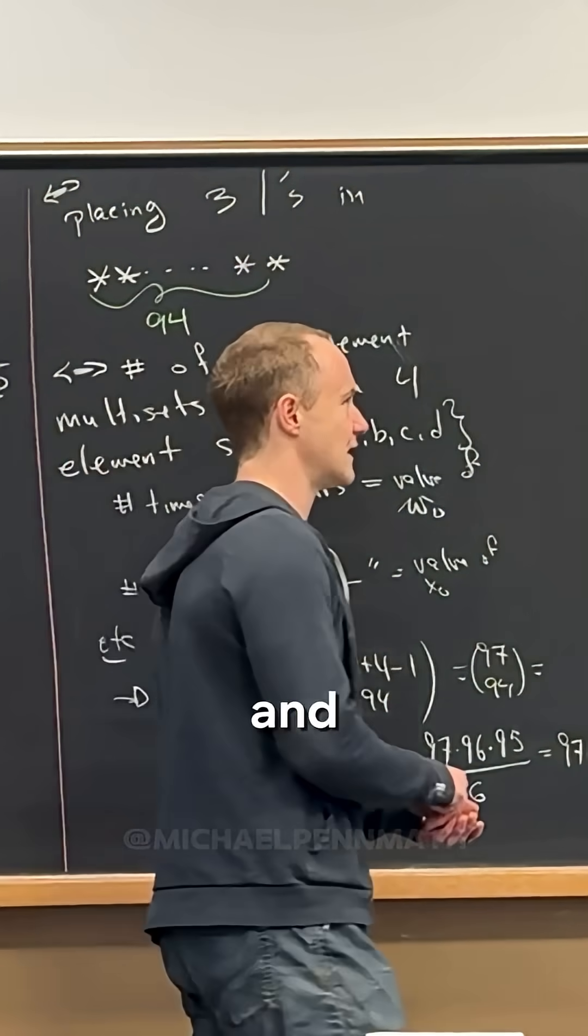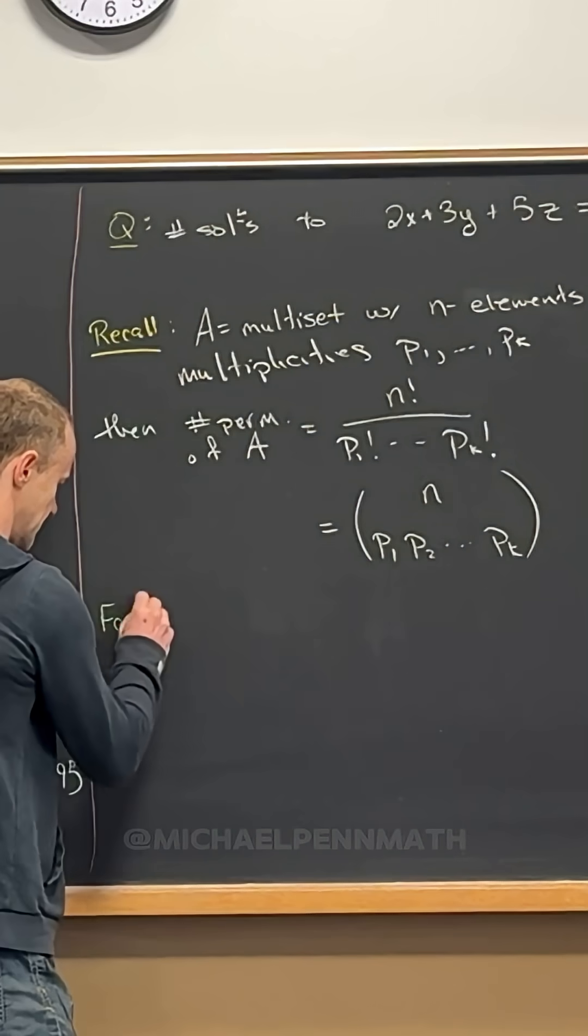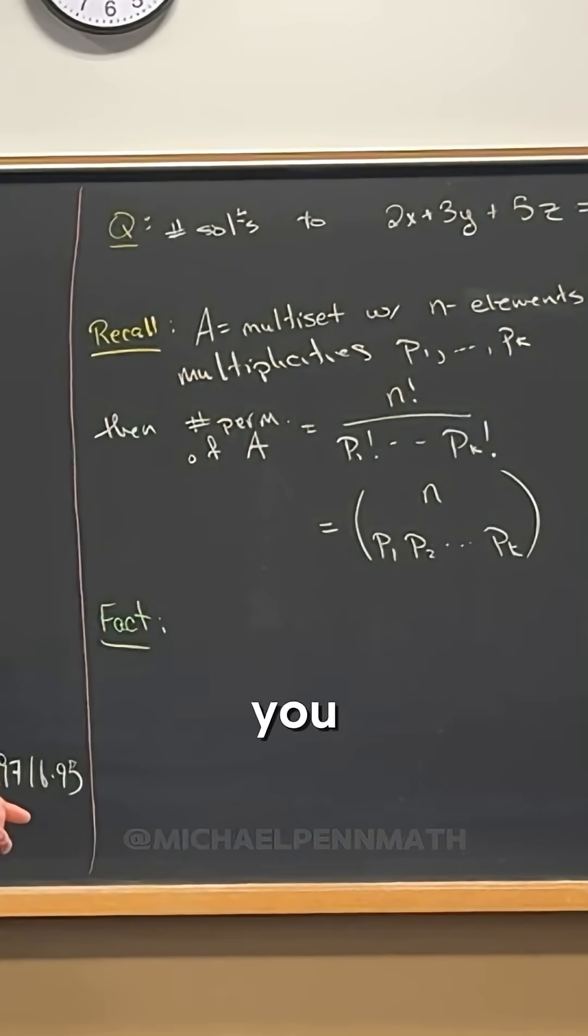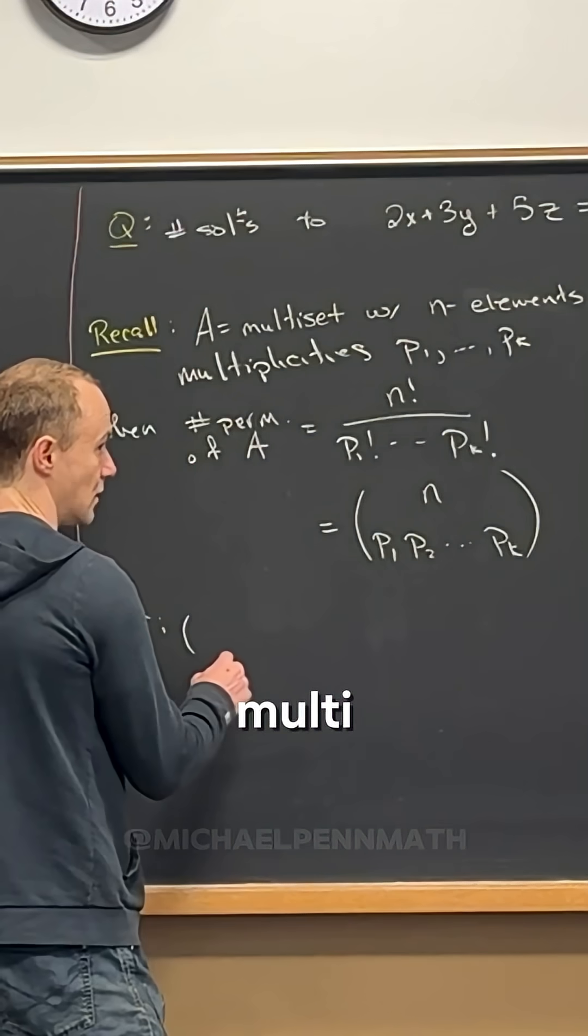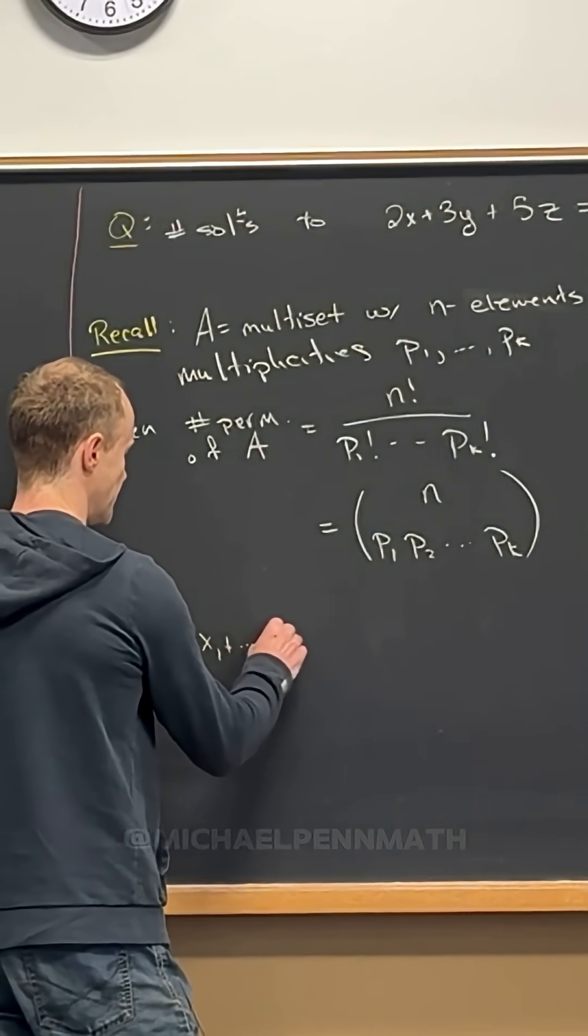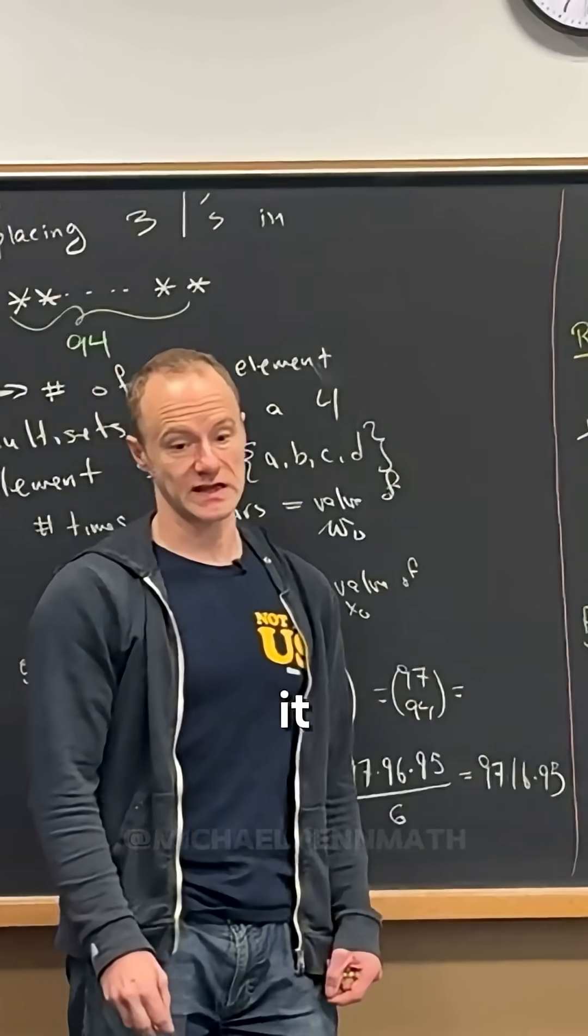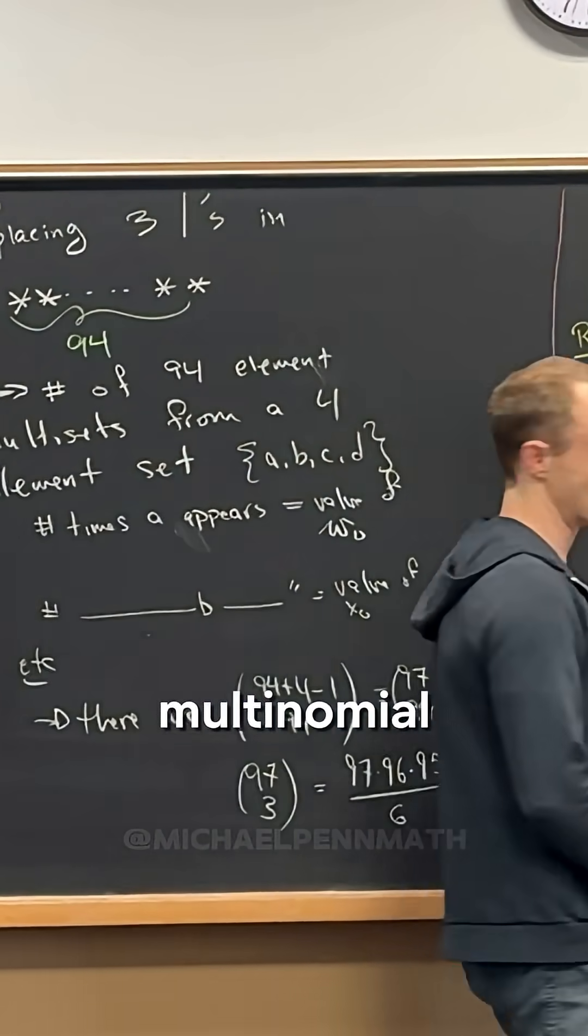And then here's a fact and we can maybe talk through the combinatorics of this fact. But if you take the multinomial, if you take x1 add it up to xk and you raise it to the n, it expands with these multinomial coefficients.